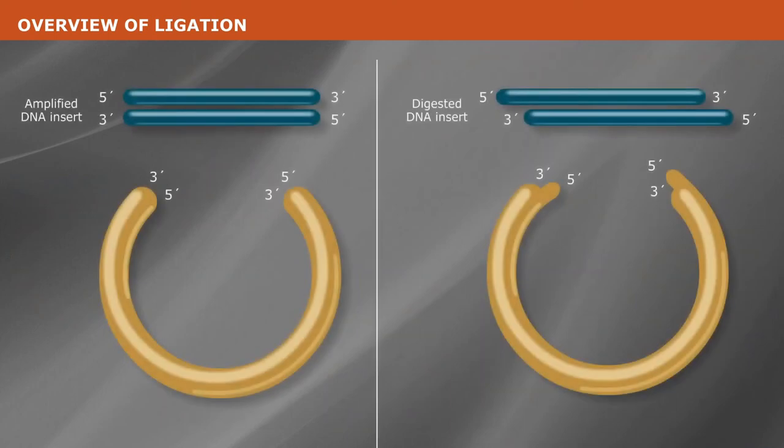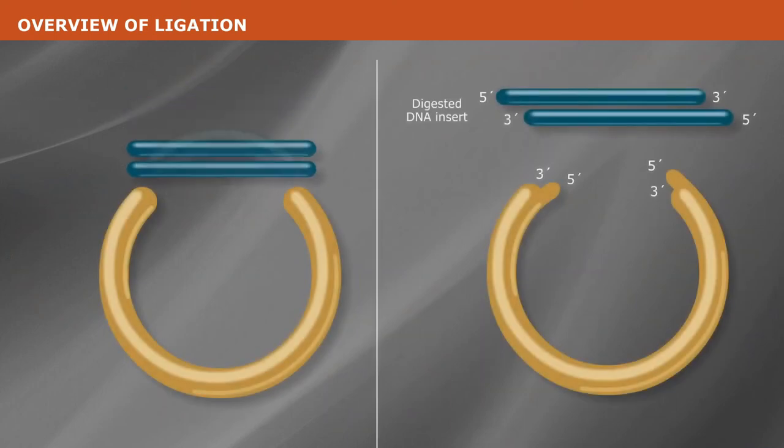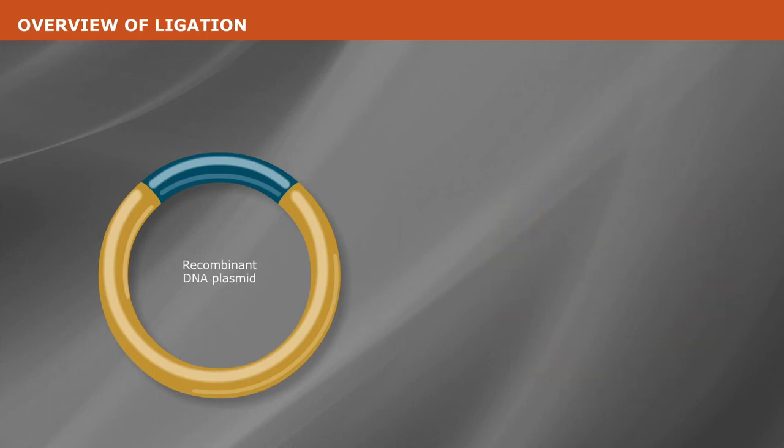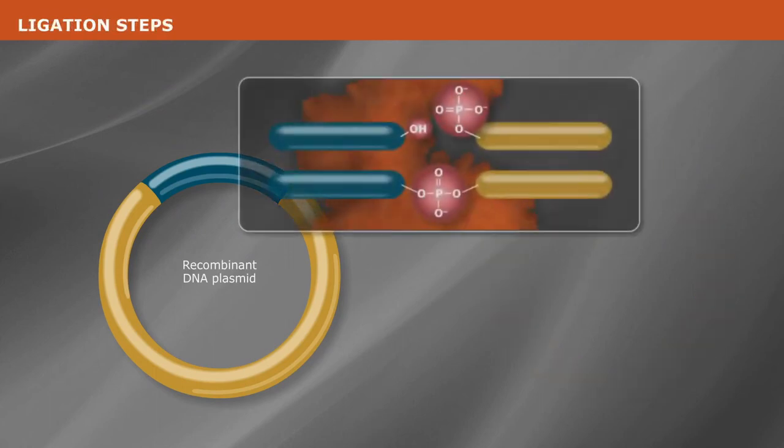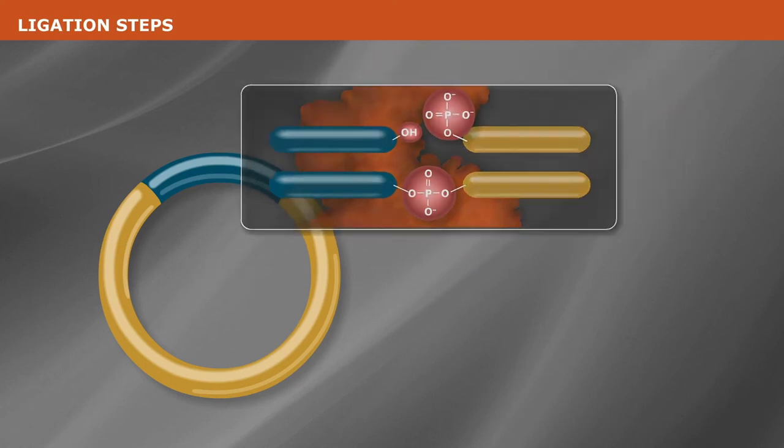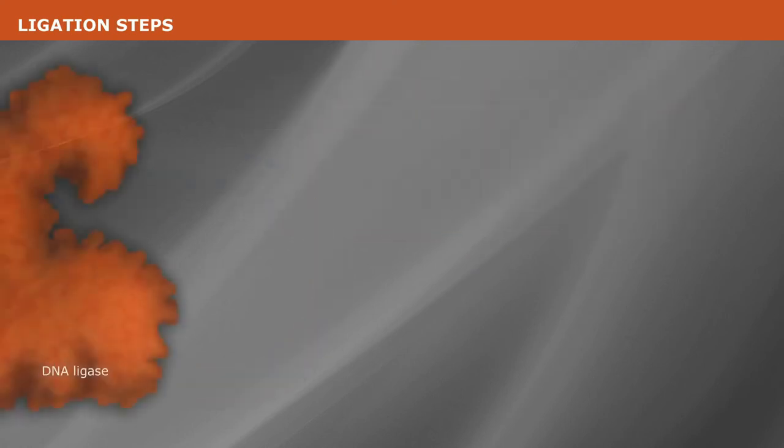DNA ligase may be used to join double-stranded DNA fragments with either blunt or cohesive ends to form recombinant DNA plasmids. A DNA ligase catalyzes the formation of a phosphodiester bond between juxtaposed 5'-phosphate and 3'-hydroxyl termini in duplex DNA. Ligation proceeds in three steps.